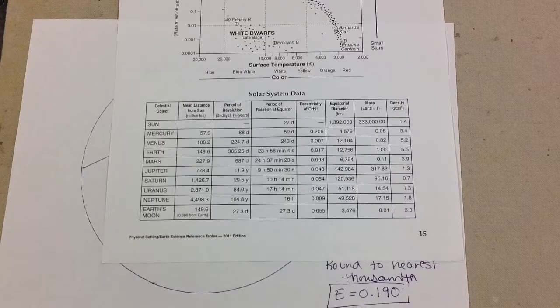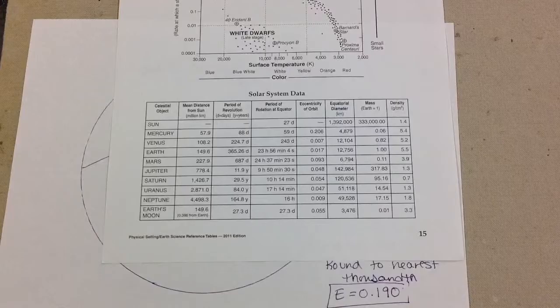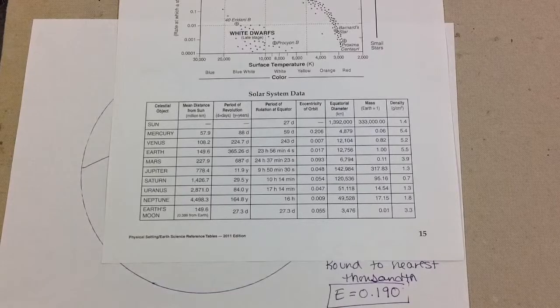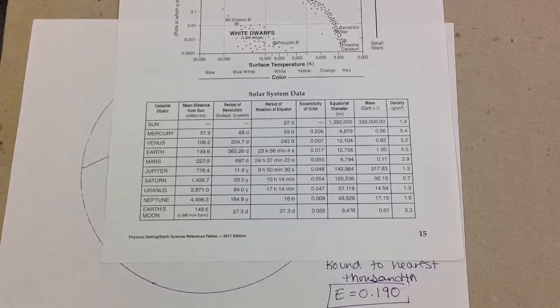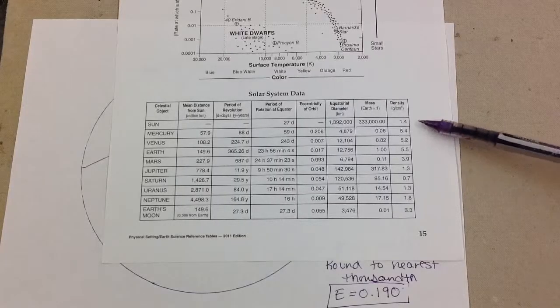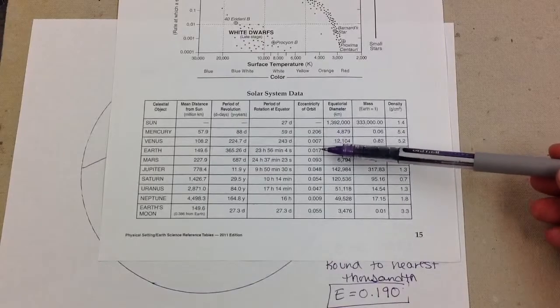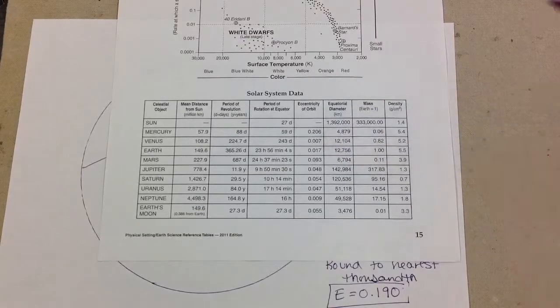And then the other questions you can be asked are, what planet has the least eccentric orbit, and which planet has the most eccentric orbit? If you look, you can see Mercury is the most eccentric because it's closest to a value of 1, whereas Venus is the least eccentric.